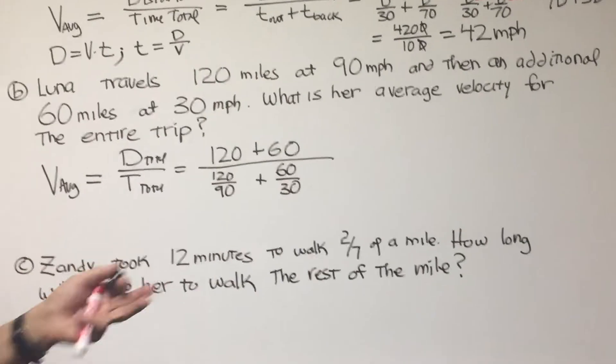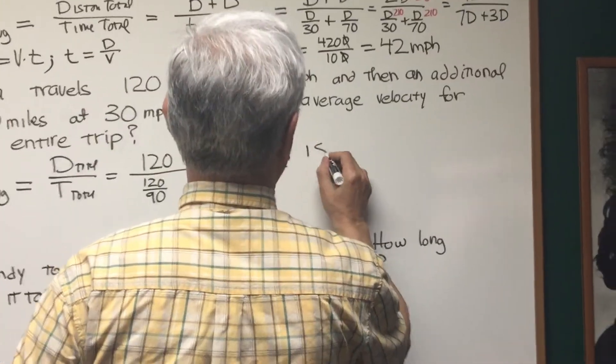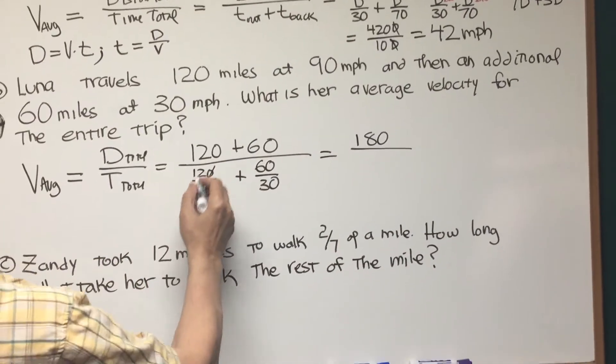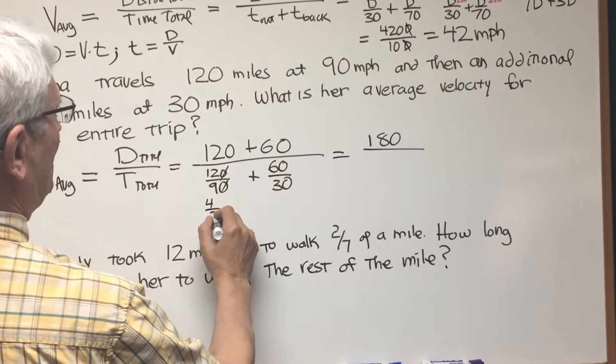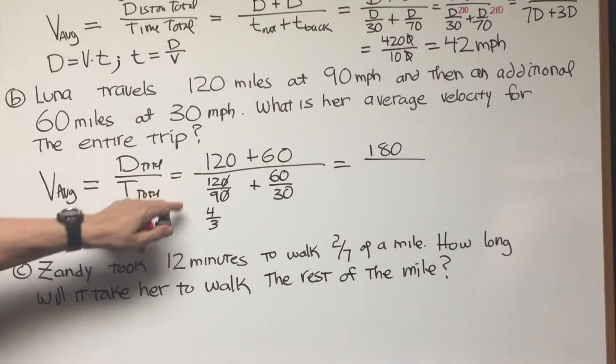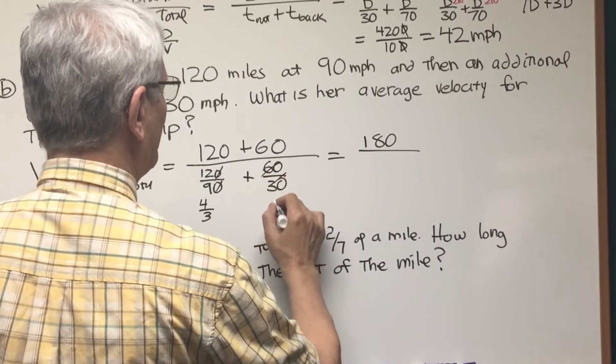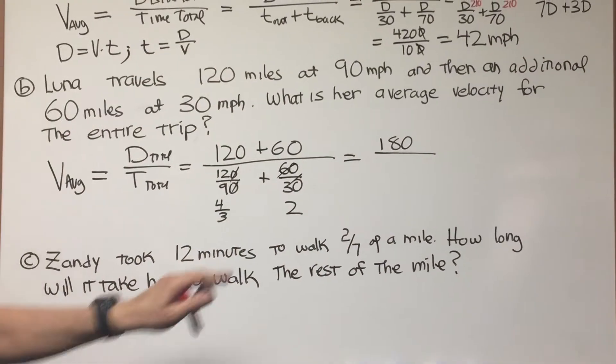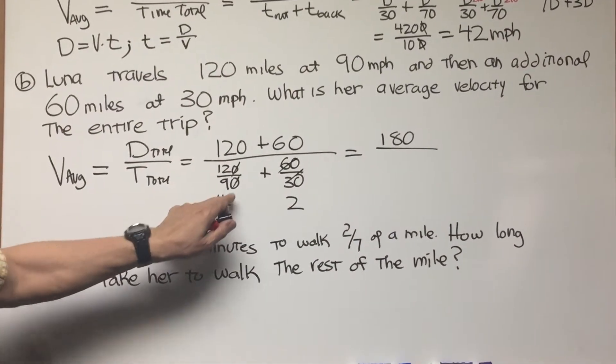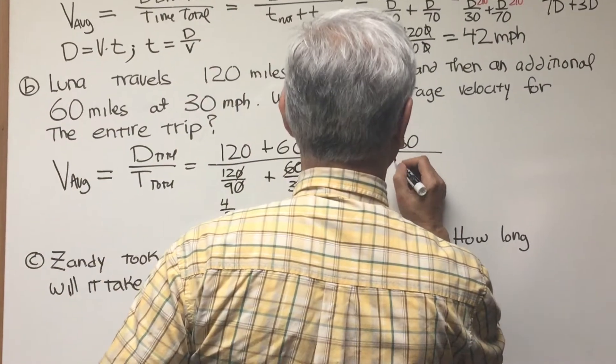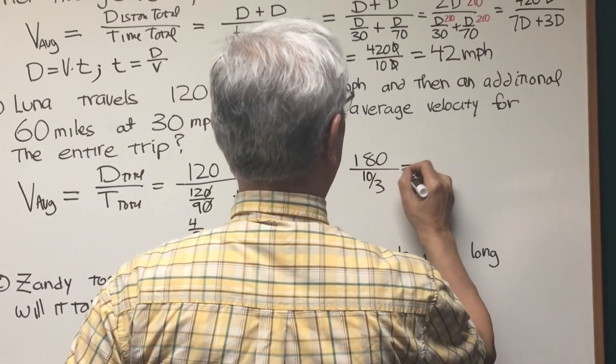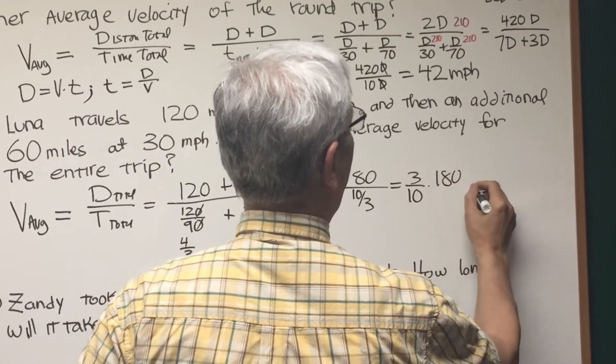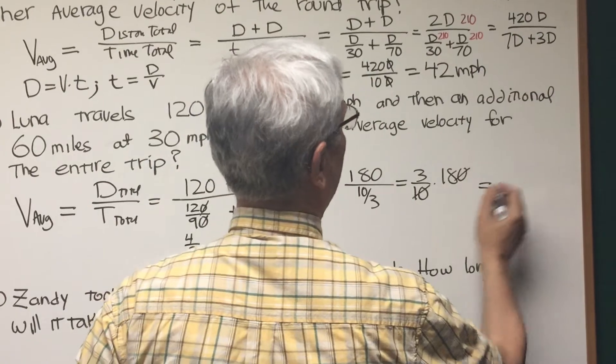All we have to do is simplify this fraction, and that's our average velocity. Let's do that very quickly. This is going to be 180. 12 over 9, 3 goes into 12 four times, 3 goes into 9 three times, that's 4 thirds. 60 over 30 is 2. 2 and 4 thirds, if I convert that to an improper fraction, 2 times 3 is 6 plus 4 is 10, so that's 10 thirds.